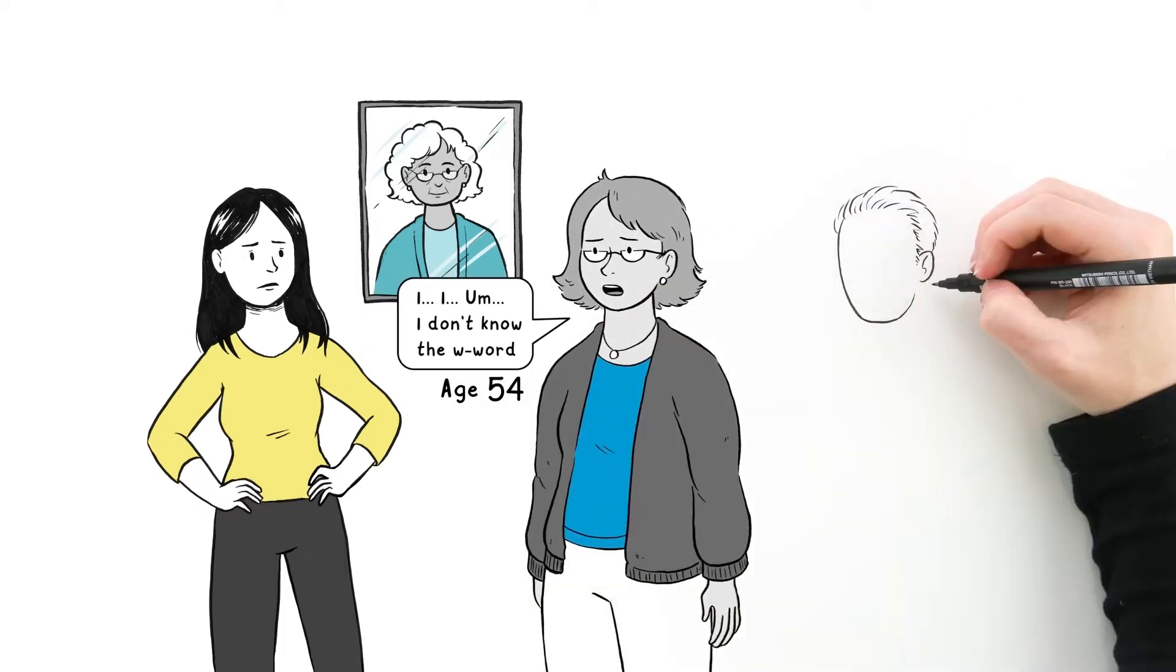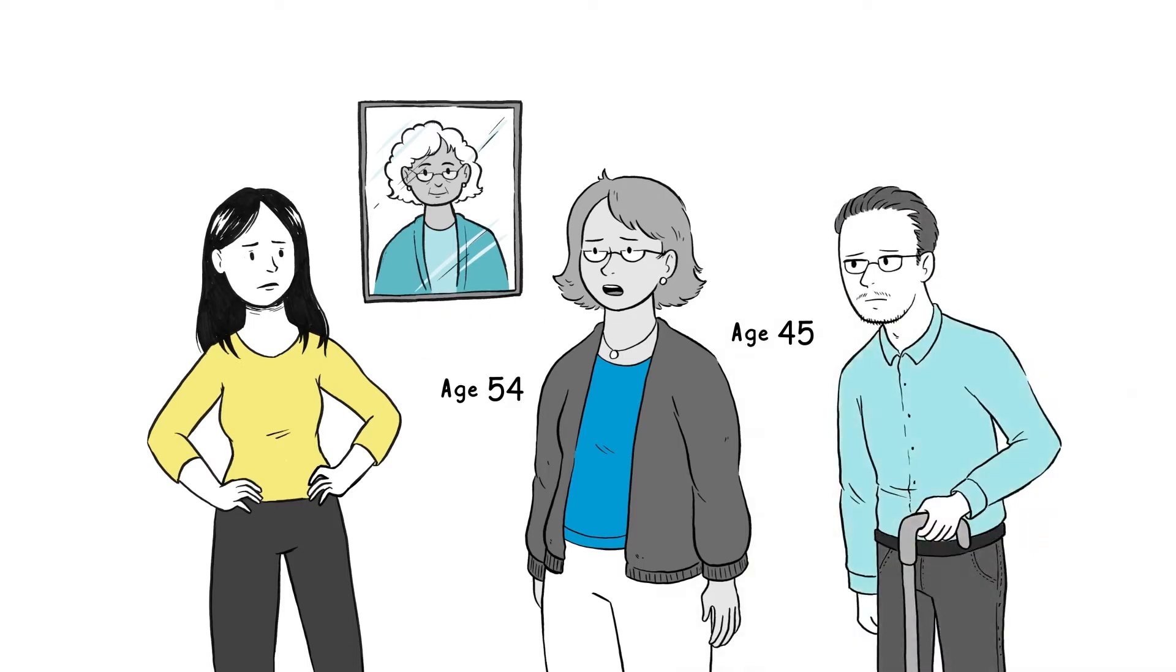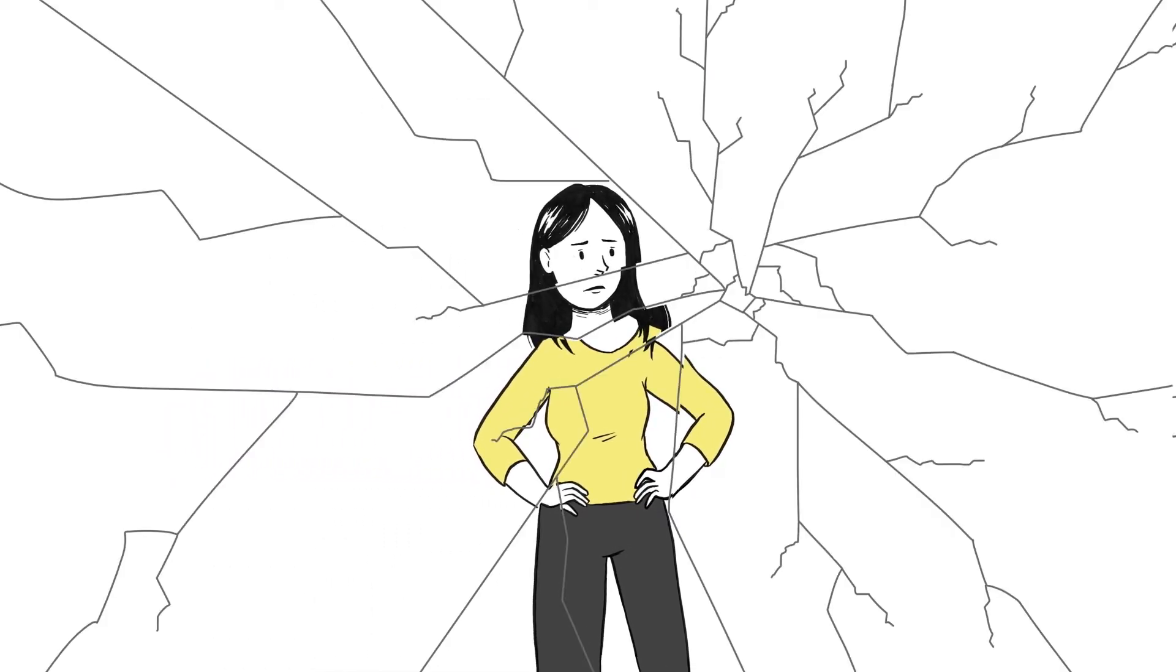And now Mia's father, who was only 45, can no longer work due to muscle weakness and bone pain. Mia is healthy and active, but so were her relatives before their illnesses. Would she have the family curse too?